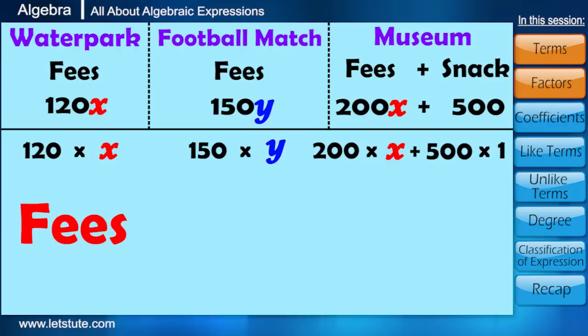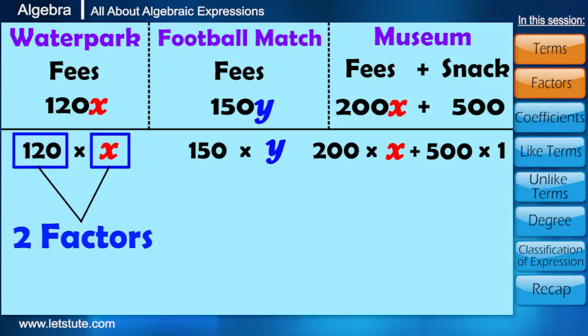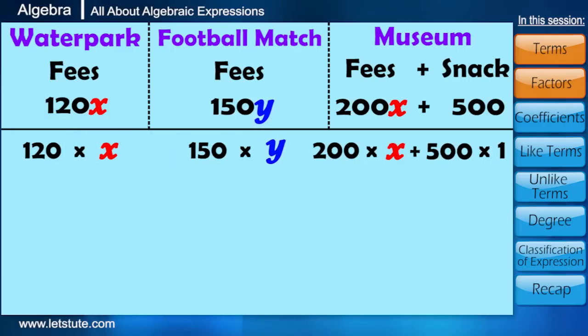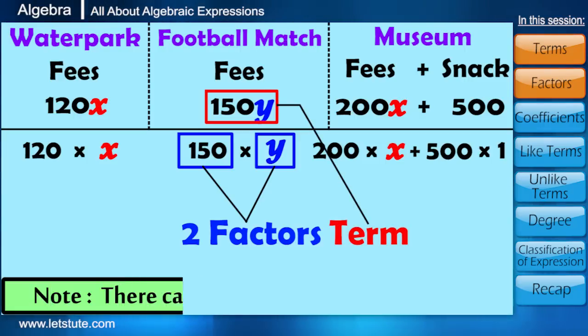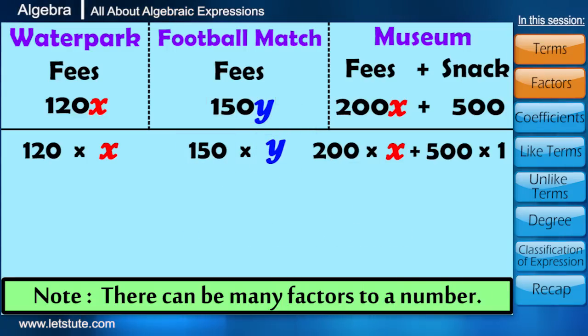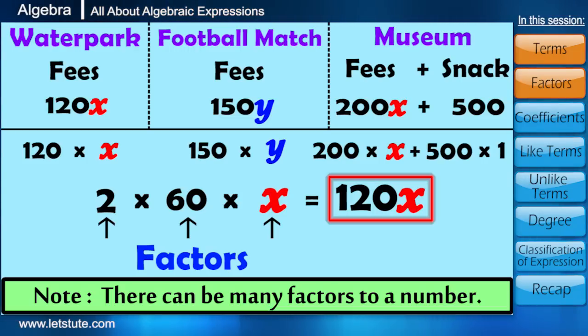So here fees 120 and number of students X are the two factors of the term 120X. Similarly, 150 and Y are called as the factors of the term 150 into Y. Please note that there can be many factors to a number. For example, 2 multiplied by 60 multiplied by X is again equals to 120 into X. So here the numbers 2, 60 and X are also factors of 120X.